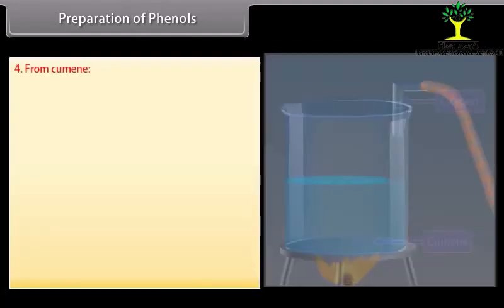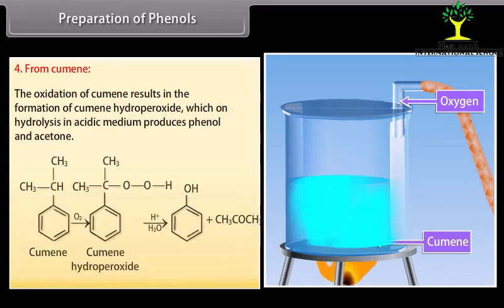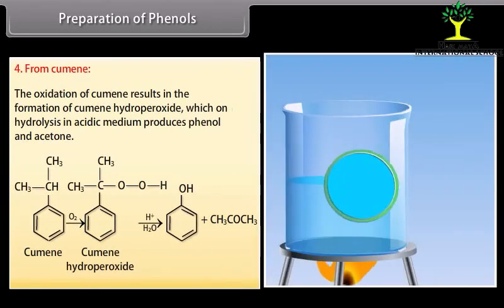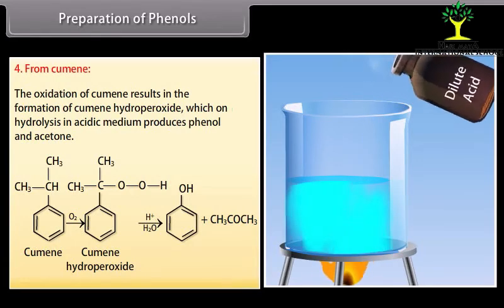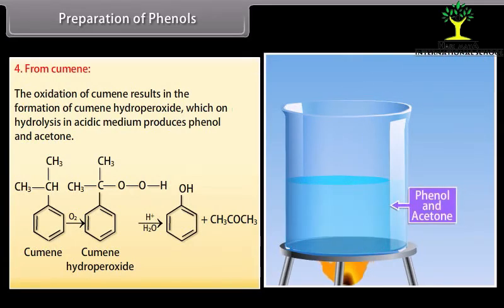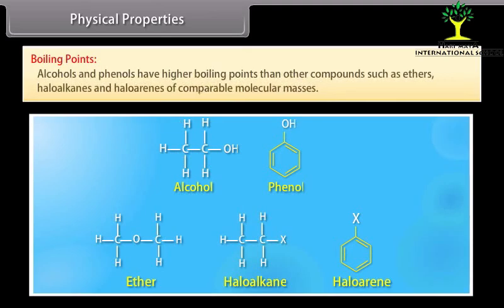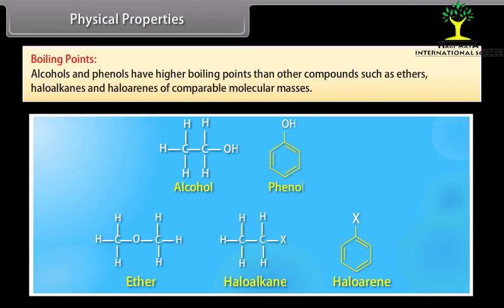From cumene: the oxidation of cumene results in the formation of cumene hydroperoxide, which on hydrolysis in acidic medium produces phenol and acetone. Physical properties — boiling points: alcohols and phenols have higher boiling points than other compounds such as ethers, haloalkanes and haloarenes of comparable molecular masses.